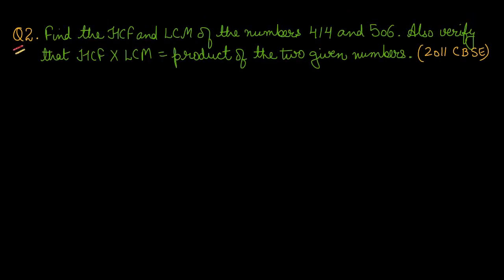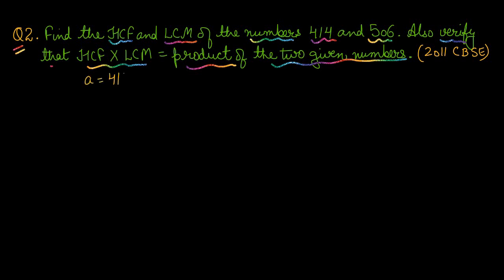Question number two: Find the HCF and LCM of the numbers 414 and 506, and also verify that HCF × LCM equals the product of the two given numbers. We have two numbers: let a = 414 and b = 506. We have to find the HCF and LCM of both numbers through prime factorization. Let us find the factors of 414.